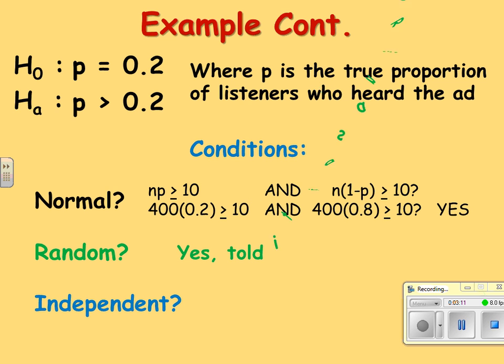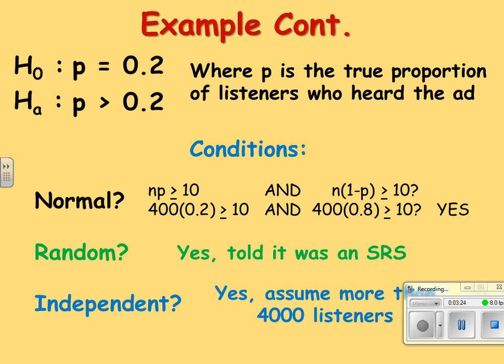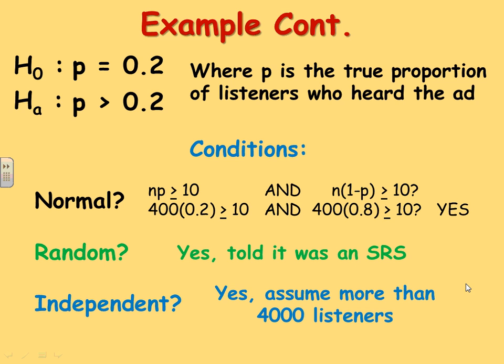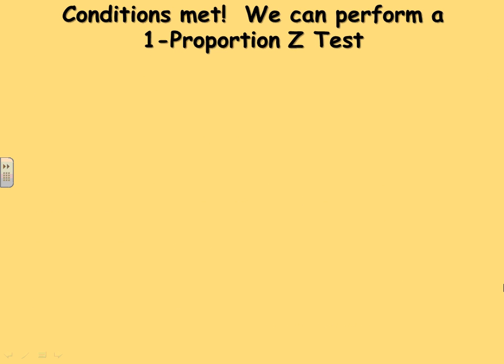Randomness, I think they just told us straight up, random sample. And the independent, a lot of times you have to assume, but you still need to write that. So we're going to assume if our sample size was 400, we will assume there's at least 10 times that many people in the population. So that's the other condition there. We can safely assume there are more than 4,000 listeners. Okay, so the conditions are met.